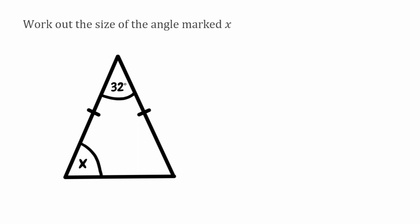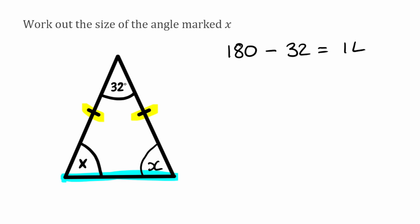For this next question, we want to find the size of the missing angle marked x. Looking at this isosceles triangle, we can see that these two sides are the same, which means this side is our base side. If the angle on the left-hand side is x, this one here must also be x. Now we want to figure out what x is. We take away the angle that we know — the only one we know so far is 32 degrees. All of them should add up to 180, so we do 180 take away 32, which gives us 148. That 148 is what both x angles at the bottom add up to.